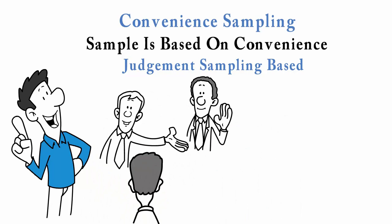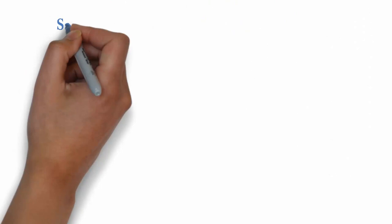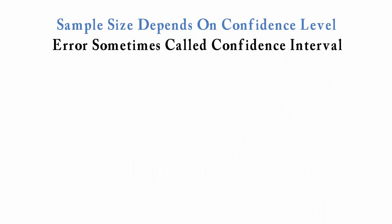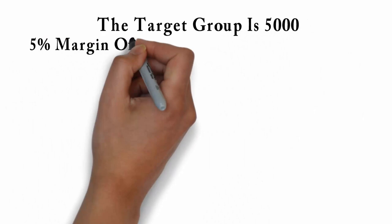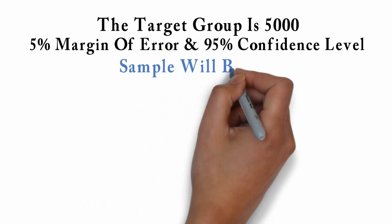Sample size depends on confidence level, margin of error, sometimes called confidence interval, and the proportion of the sample which will choose a given answer to a survey question. The minimum sample size is 100 and the maximum is 1000. To calculate, use an online sample calculator or arrange for a statistician to work out. For example, if the target group is 5000 and we want a 5% margin of error and 95% confidence level, a sample will be 357.